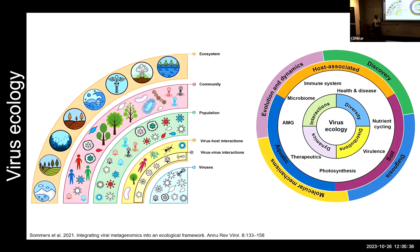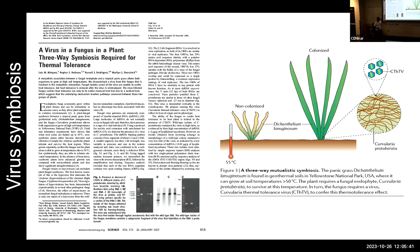Perhaps the most amazing example of beneficial viruses is a three-way symbiosis in a panic grass growing in Yellowstone National Park at about 55°C. The grass is colonized by a fungus, and the fungus is infected by a virus. Remove the virus and the fungus rapidly kills the grass; remove the fungus and the grass doesn't grow. The virus induces thermotolerance through the fungi into the grass, switching on certain genes and modulating fungal growth rate via hypervirulence.